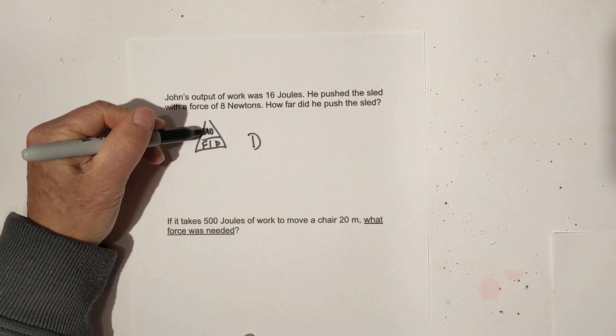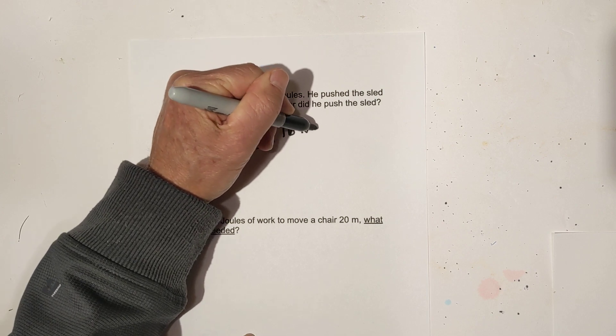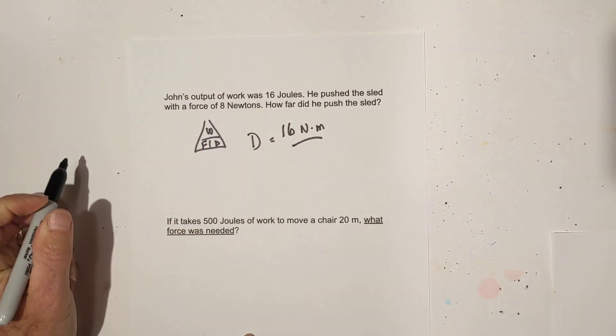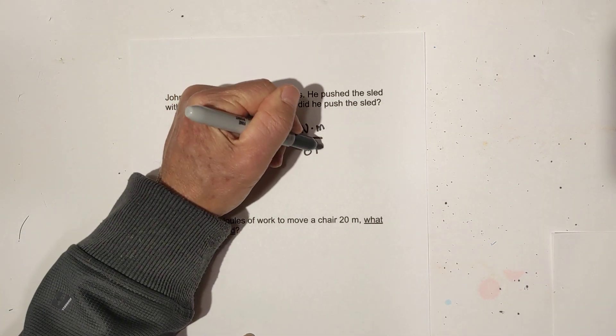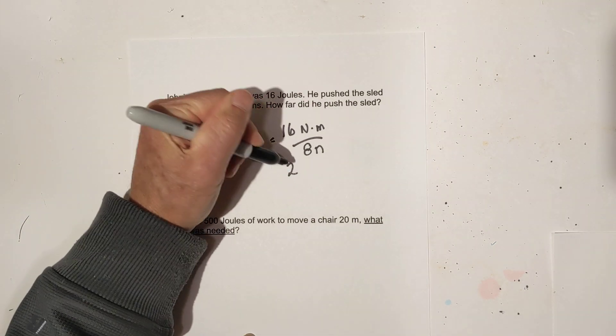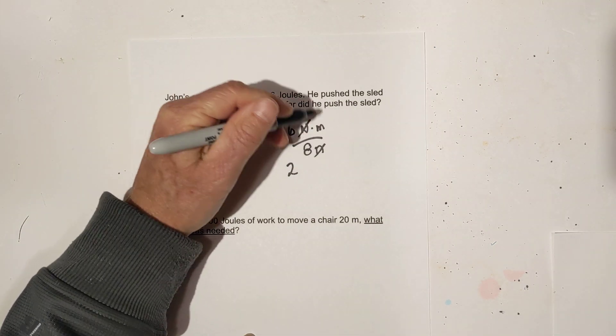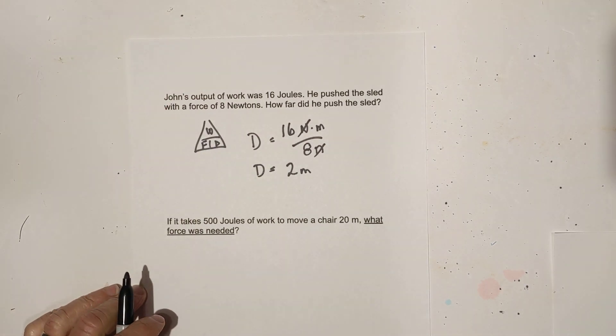Distance is work divided by force. The work was 16 joules, I'm going to rewrite as newtons times meters, and we have 8 newtons. So 16 divided by 8 is 2. Watch the units. The newtons cancel, so it's a distance of 2 meters.